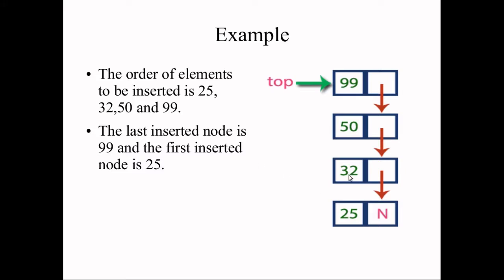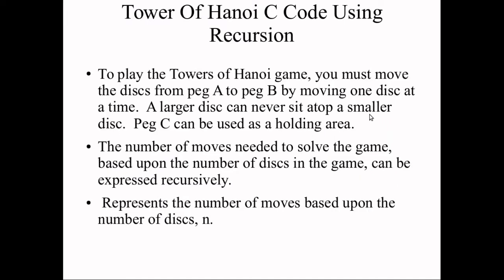The second element points to the address of the first element, the third points to the second, and the final element points to the third, and so on. If you want to delete any element from the stack, you can only delete the final element — the top. So 99 will be deleted automatically, and the topmost element will become 50.